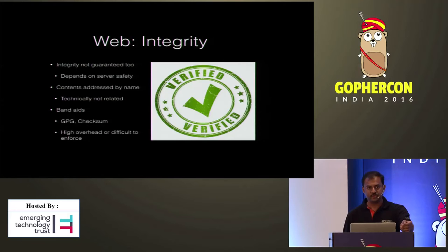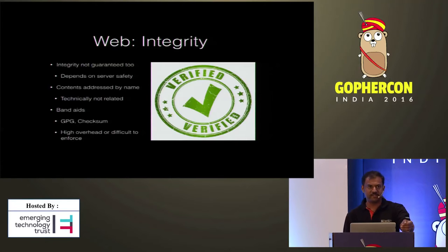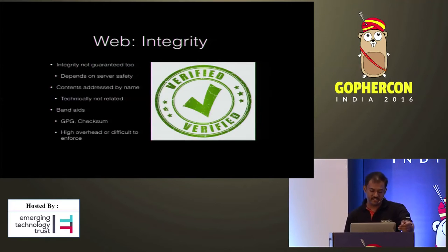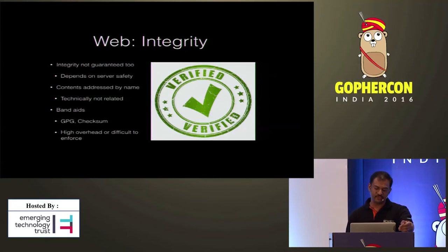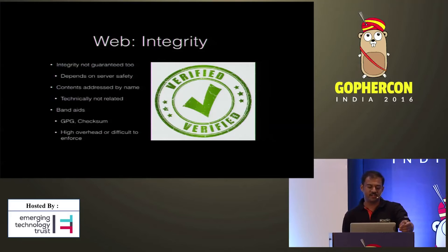This is also due to the way we address content on the web. Content is usually addressed by name, but technically there is no relation between the name and the actual content. So anybody can change the content without changing its name. This is useful in a lot of situations where we can update content, but it could be a problem if the content is very sensitive data.